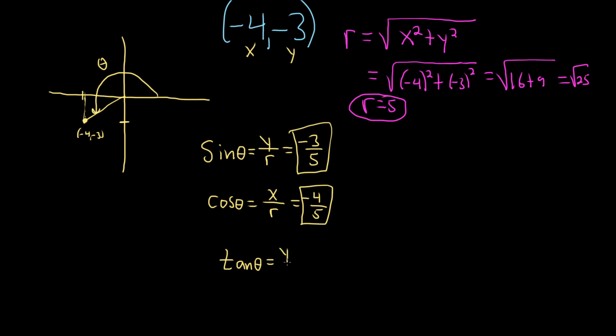And the tangent of theta is given by y over x. So basically, you just divide these. So it'll be negative 3 over negative 4, so that's 3 over 4. That's the tangent of theta.